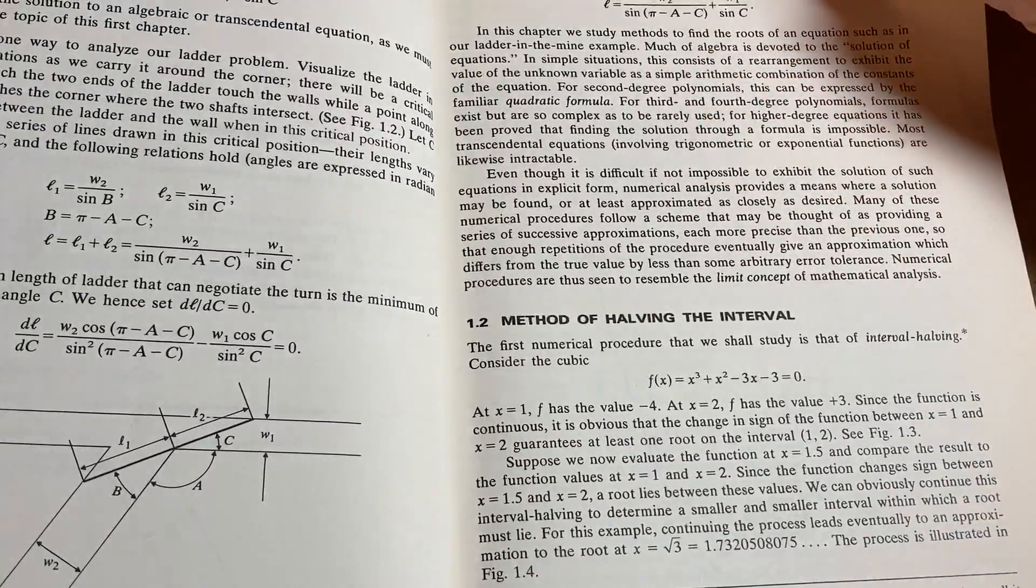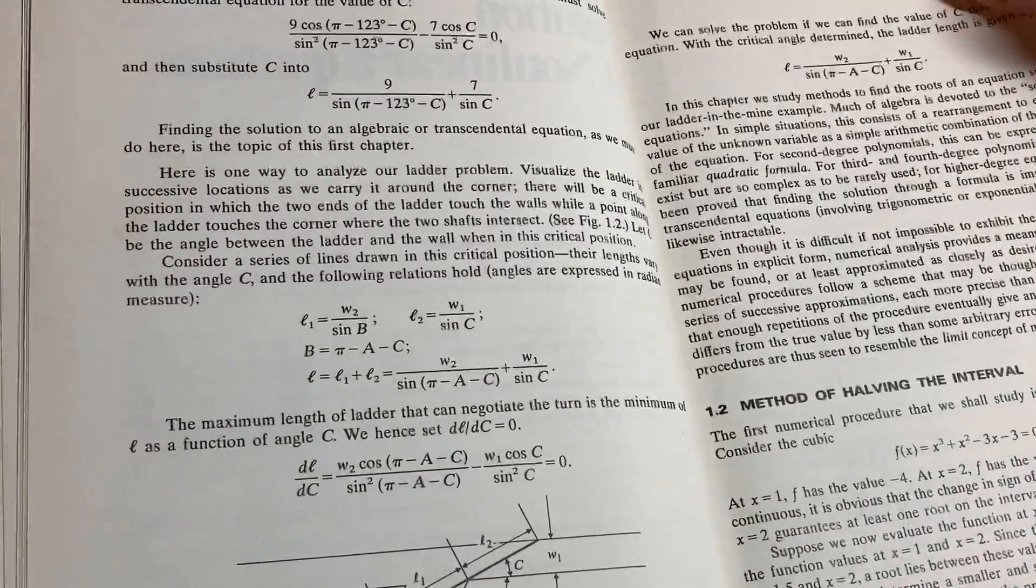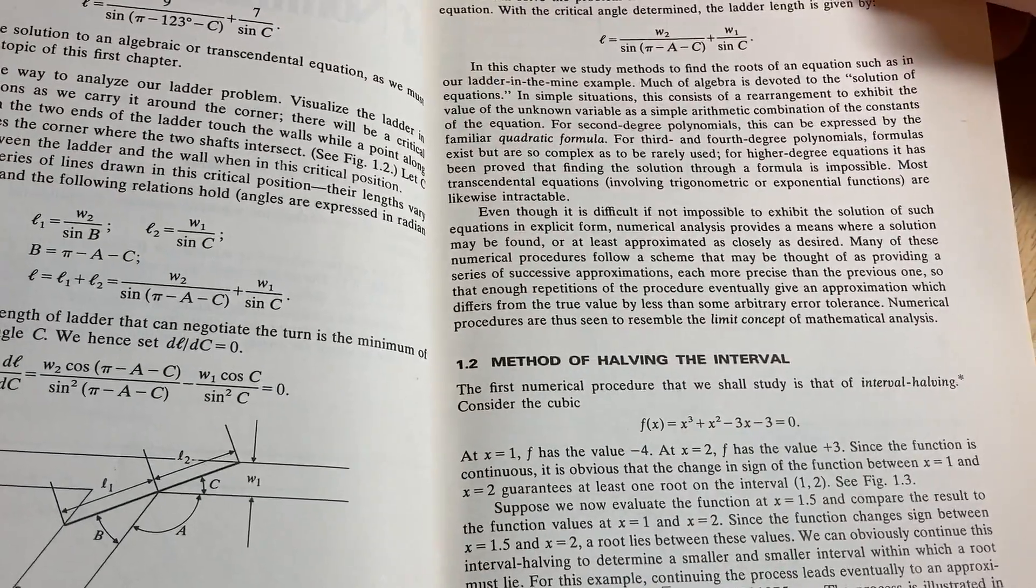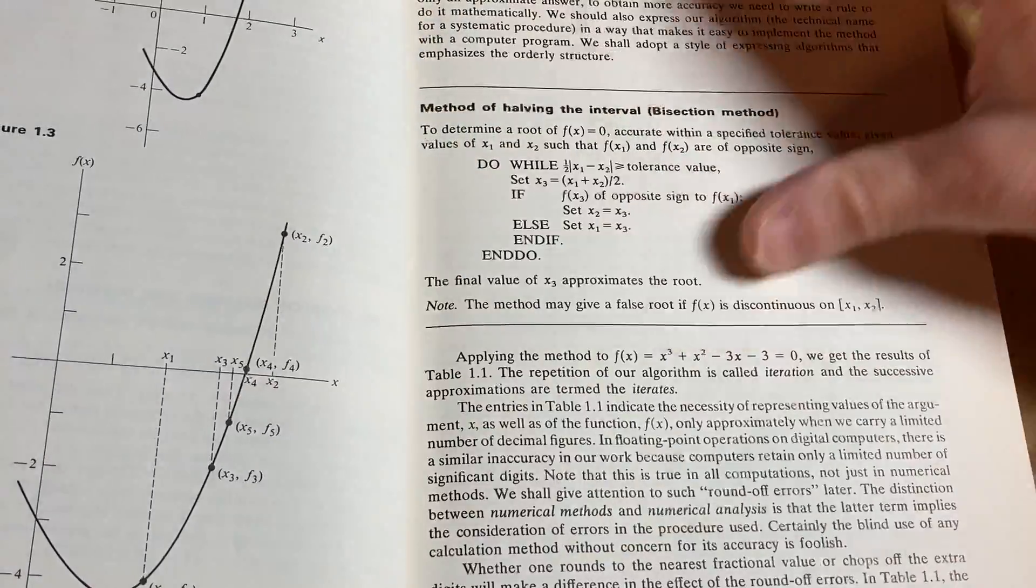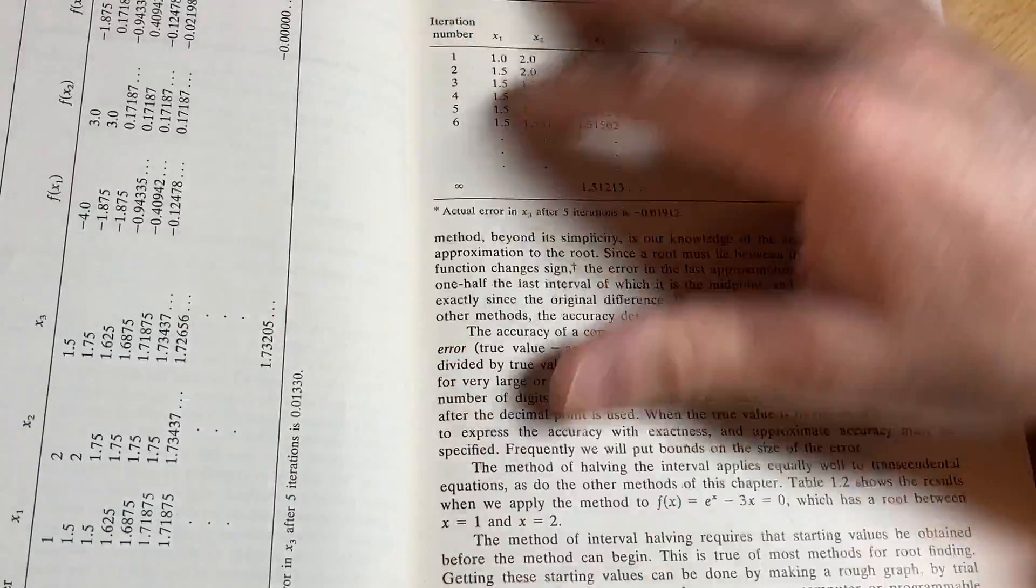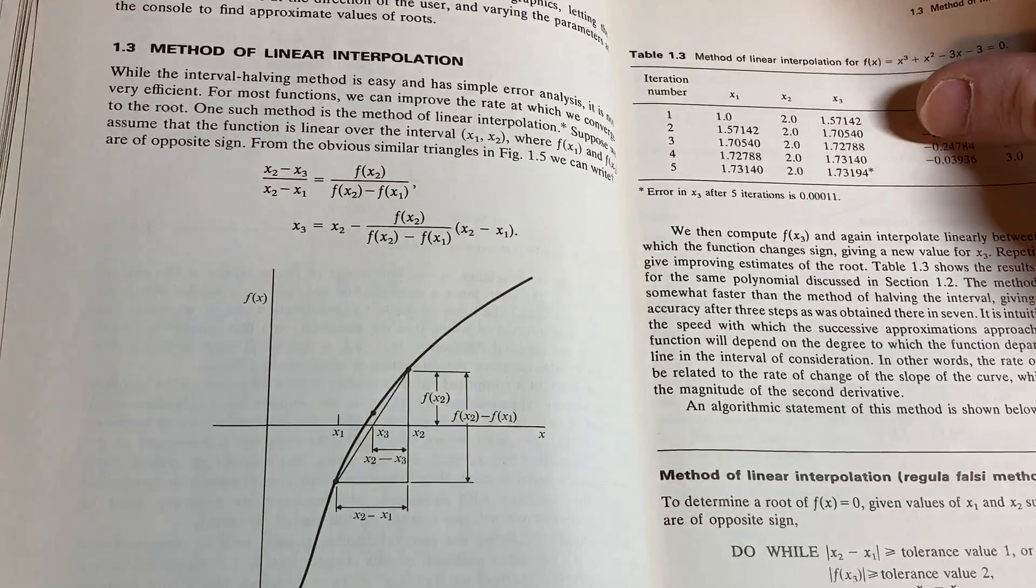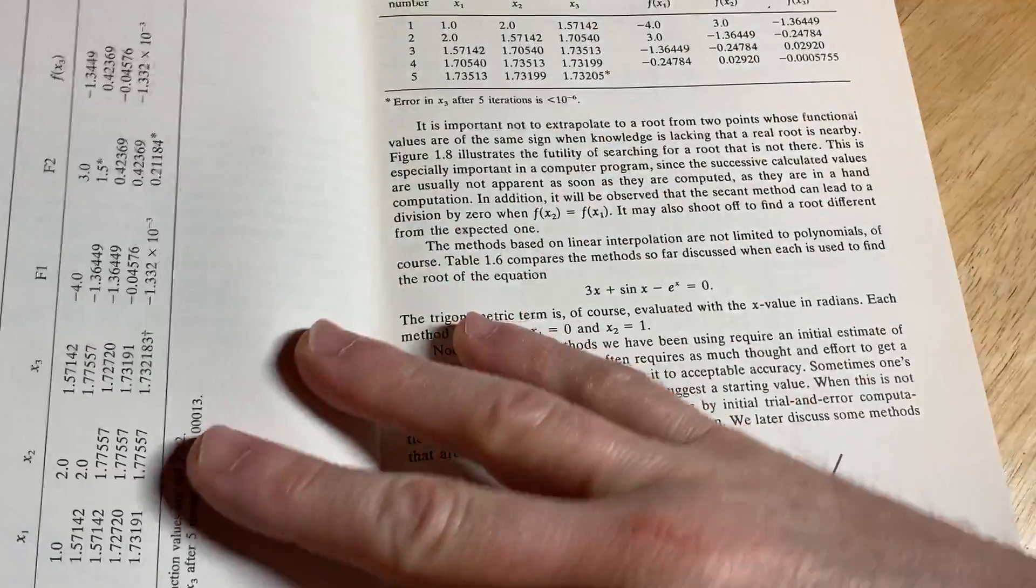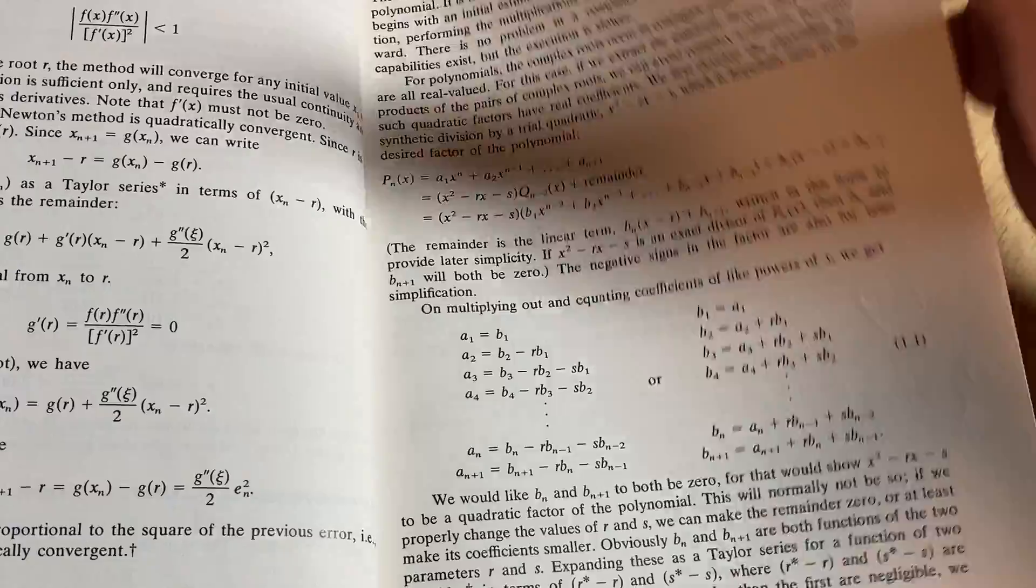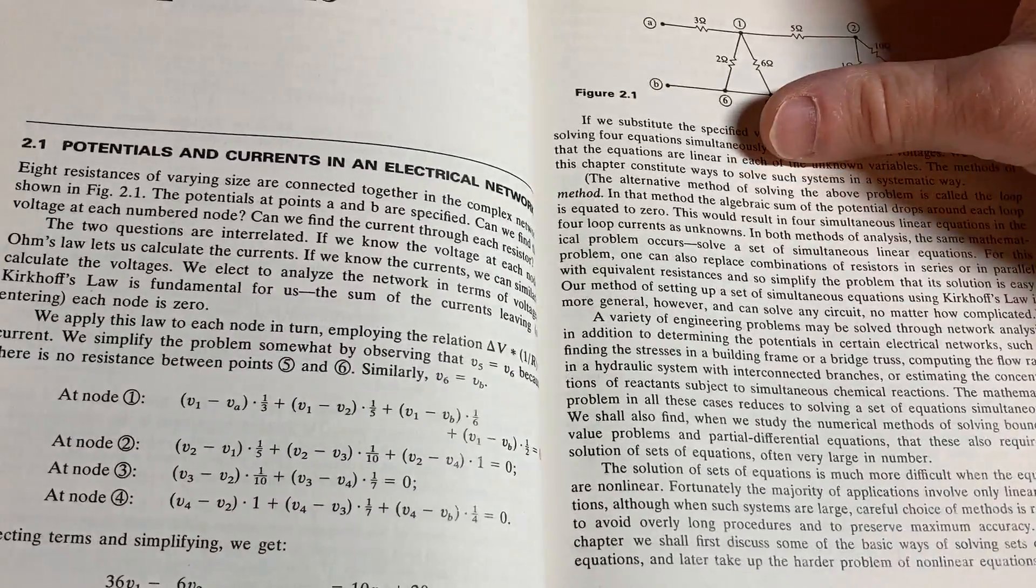And they go through and they solve it. Method of halving the interval by bisection method. Method of linear interpolation. Interesting, right? So it is a book on numerical analysis.